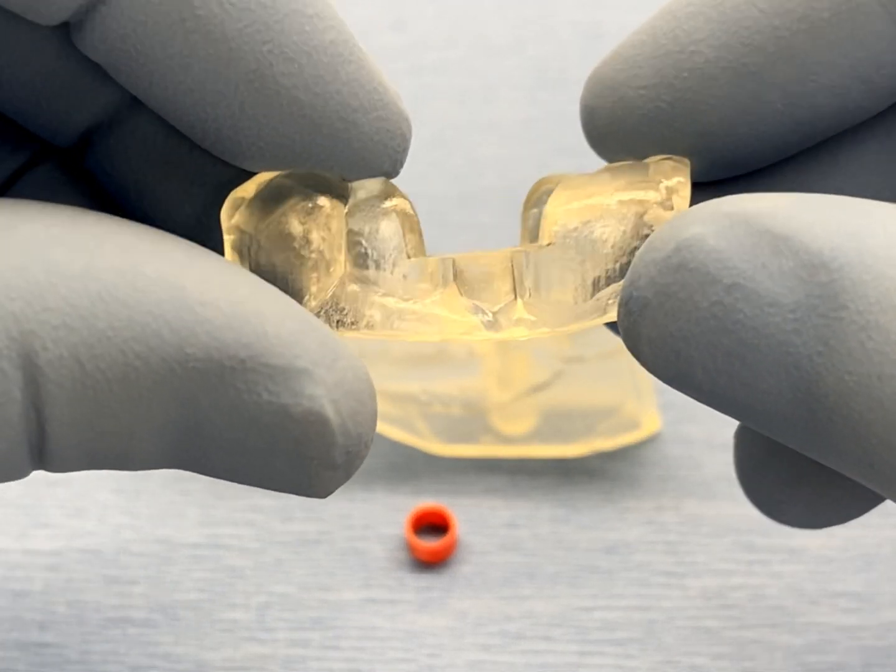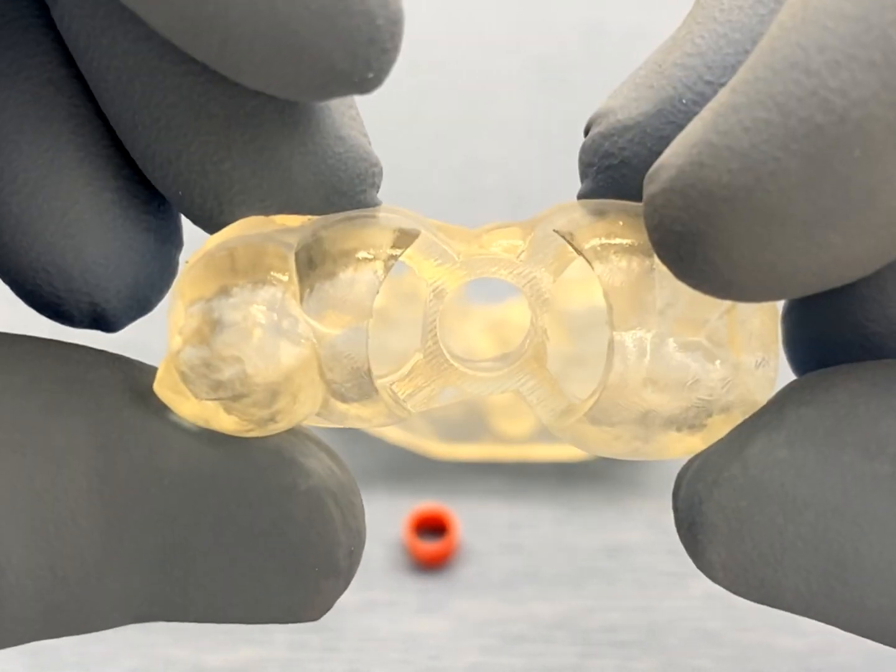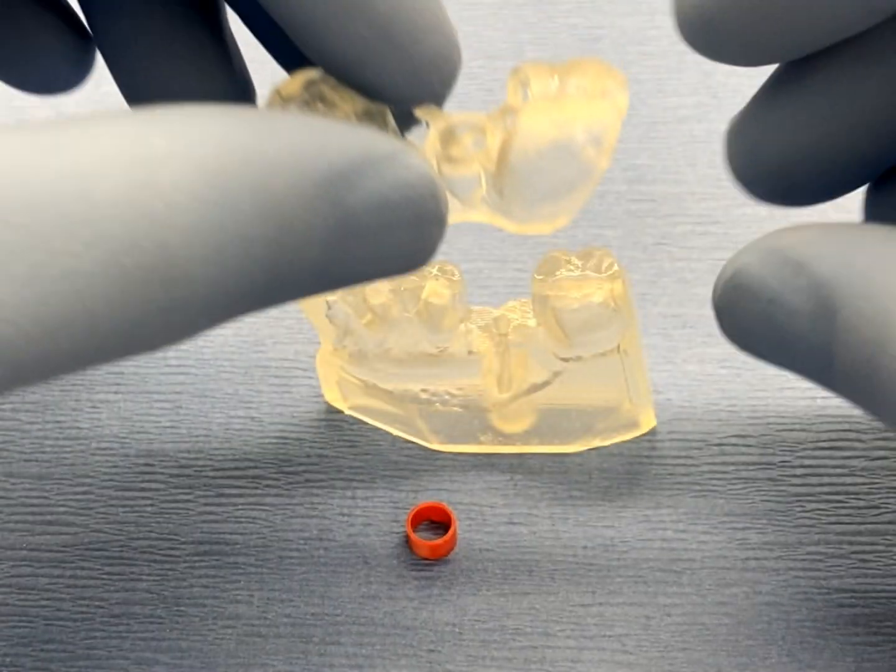Then, remove the guide from the model and verify that the guide tubes are free of any irregularities which could compromise the complete insertion of the GRS surgical ring.